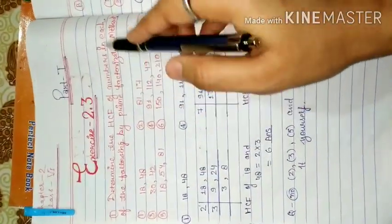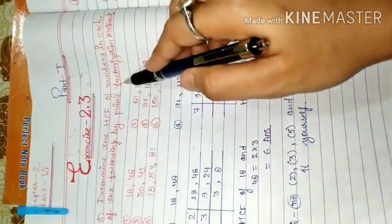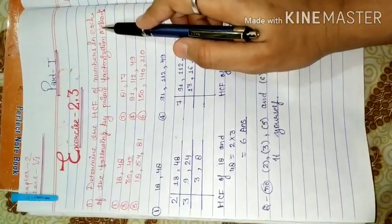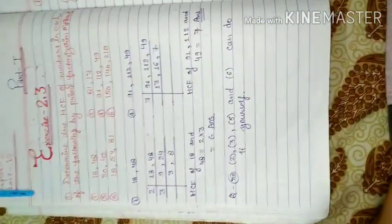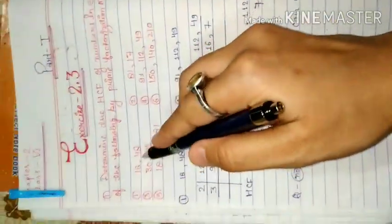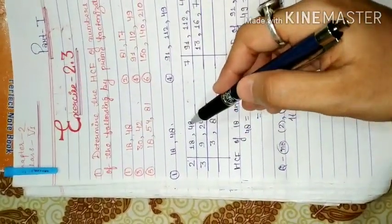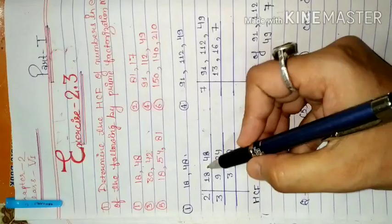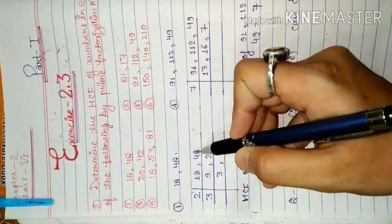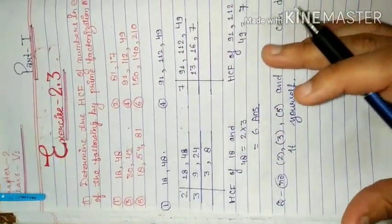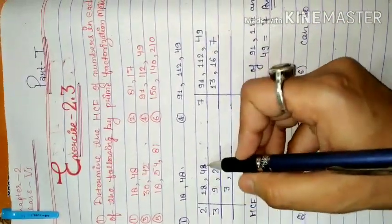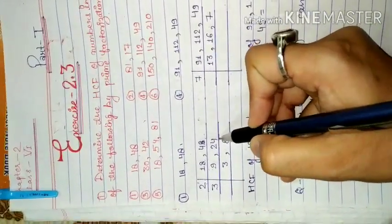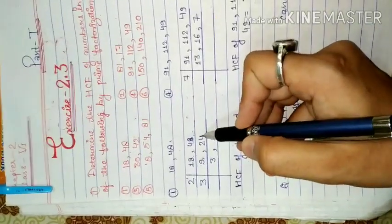Determine the HCF of the following in each case by prime factorization method. The first question is 18 and 48. First we will take LCM and combine them with both numbers. The two given numbers, when we have a divisor from one table, we will check. 18 and 48, both are even numbers. Obviously two divides both: 2 nines are 18, 2 twos are 4, 2 fours are 8.